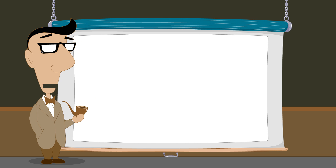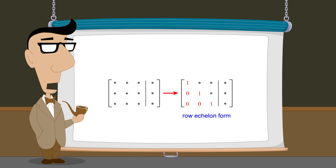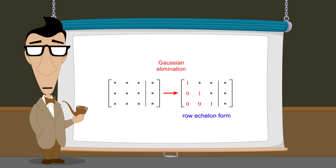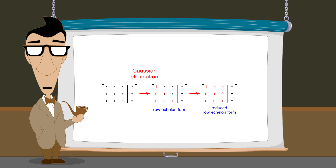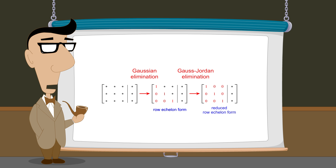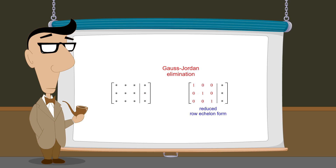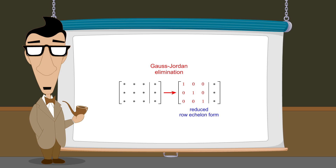As we mentioned before, one advantage of reduced row echelon form is that these values can be read directly from the matrix. The process used in the previous lecture to reduce a matrix to row echelon form is called Gaussian elimination, and the process used in this lecture to reduce a matrix in row echelon form to reduced row echelon form is called Gauss-Jordan elimination. However, the term Gauss-Jordan elimination can also be used to describe the entire process of using elementary row operations to reduce an augmented matrix in any form to reduced row echelon form.